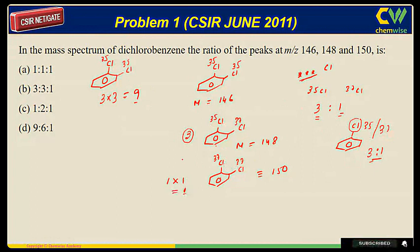So it seems it will be 9 to 3 to 1, but here the twist lies. Here we have another possibility - this Cl is 35 and this Cl is 37. This is 35 and 37. We know the natural abundance 35 to 37 is 3 to 1.